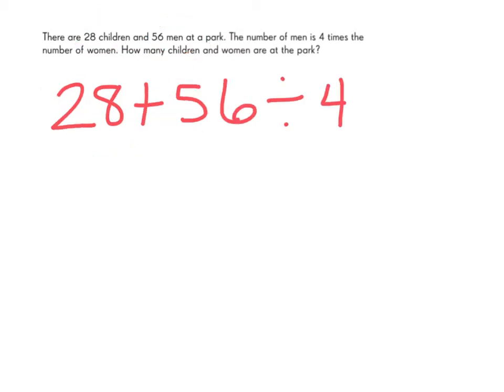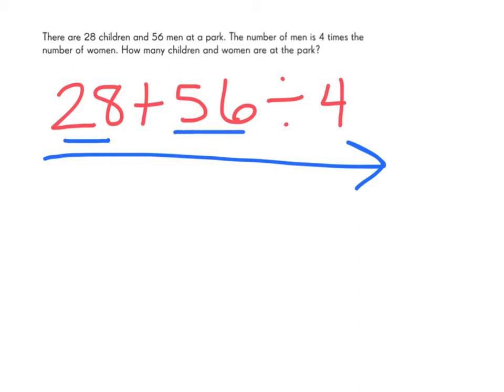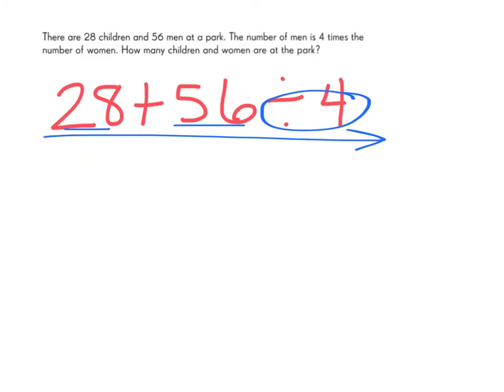Before we begin, let's think a little bit harder about what this expression really is telling us. In our past problems, we've worked from left to right no matter what. But if we were to add the number of children to the number of men, we wouldn't get the correct answer if we then divided by 4. The problem tells us that the number of men is 4 times the number of women, not that the number of women is the men plus the children divided by 4. This helps us see one of the rules of order of operations: you always complete multiplication and division before addition and subtraction.